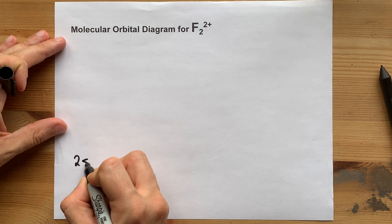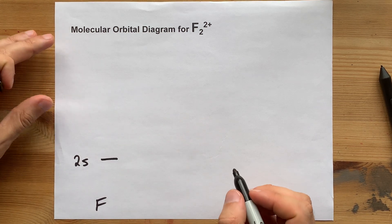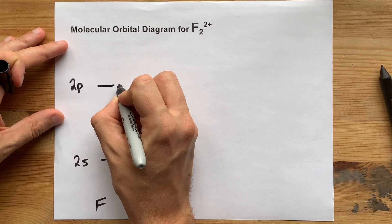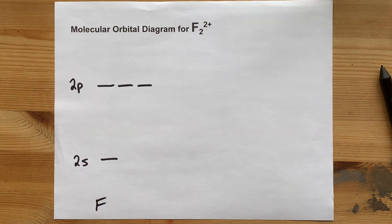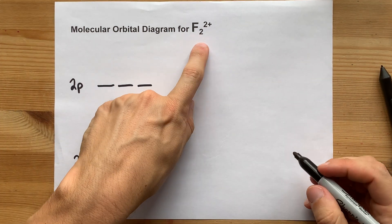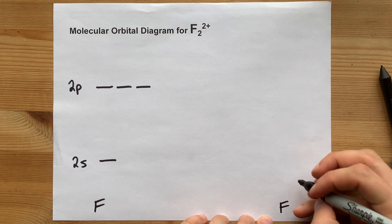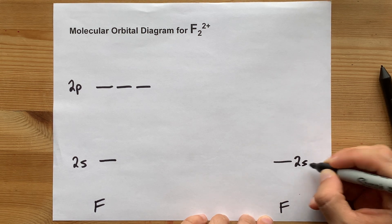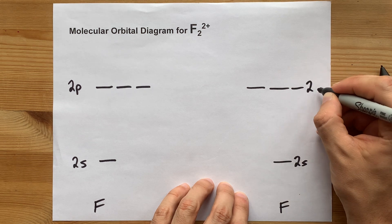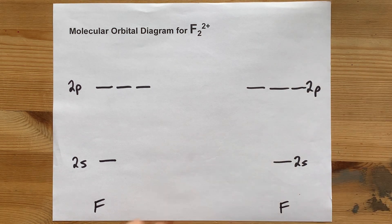What matters to me is that there is a 2s orbital in fluorine and three 2p orbitals. We're being asked for F2, so there's a second F which carries its own 2s and three 2p atomic orbitals as well.